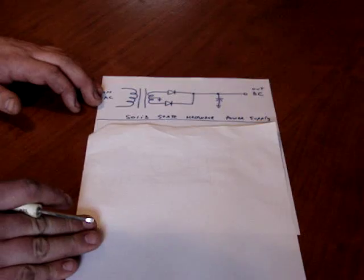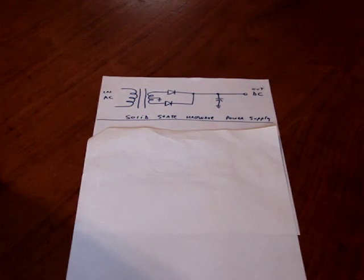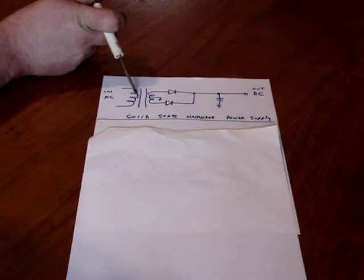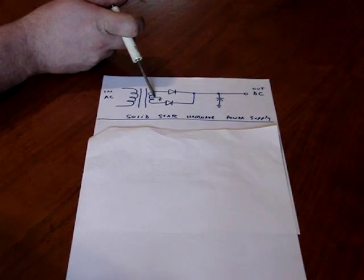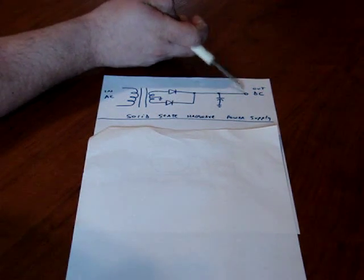So the first drawing is a solid-state half-wave power supply. It's a basic common power supply. This is a symbol for a transformer. It has a center tap that's grounded, two diodes, a capacitor, and this is your output.